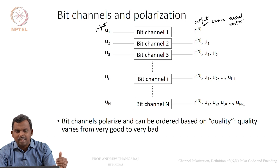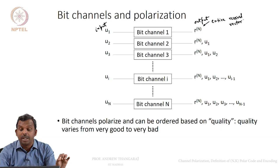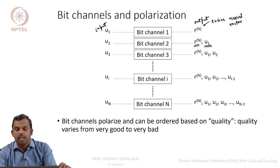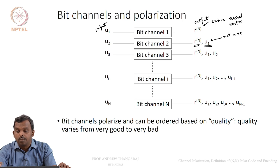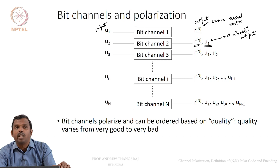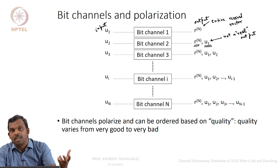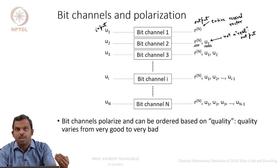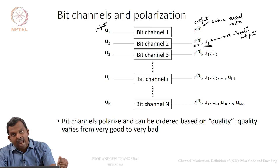Now I define the second bit channel, which has input U2. The output is the entire received vector RN, but to this I add U1 as one of the outputs of this bit channel. This U1 is not a real output — the channel only gives me RN. I will imagine that somehow I have U1, and we will see later how to create it. The second bit channel has input U2 and output as the entire received vector plus the previous bit U1.